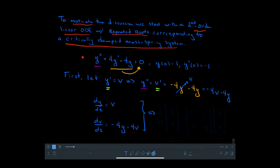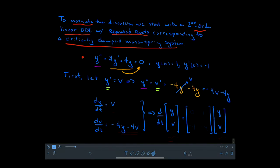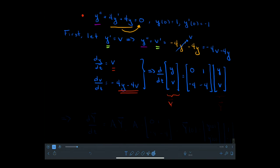I can convert this into matrix form by recognizing that on the left-hand side I'm taking the derivative with respect to time of the vector [y, v]. On the right-hand side, since these are linear combinations of y and v, I can write it as a matrix multiplication. Looking at the first equation, there is 0y and 1v; in the second, there is negative 4y and negative 4v. So matrix A equals [0, 1; -4, -4].